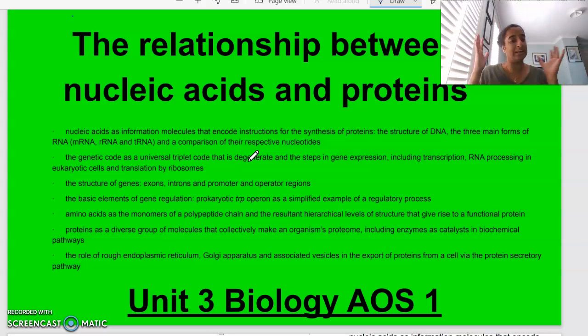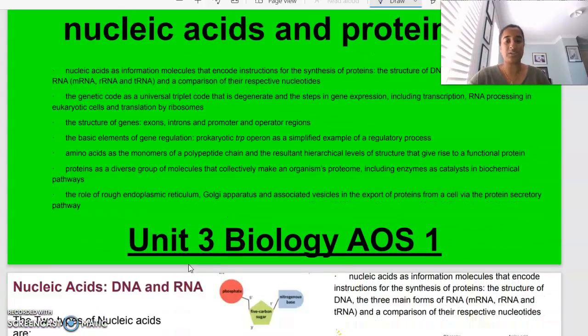It is a big one, so remember it is just a summary going over what you need to know, the main dot points of the study design for this area of study. We'll be looking at DNA and RNA, the genetic code, transcription and translation, the structure of genes, the trp operon, amino acids and how they join together, proteins, an example of an enzyme, and the role of the rough ER, Golgi apparatus, and vesicles in protein export from the cell.